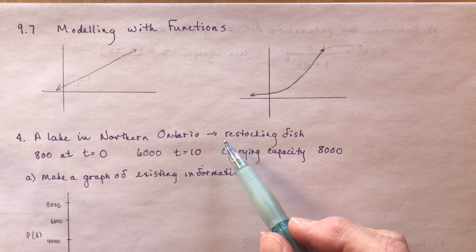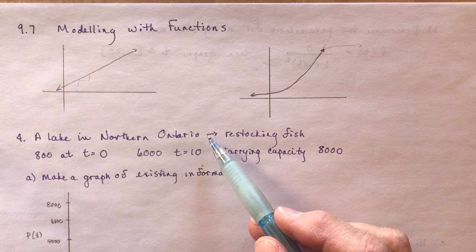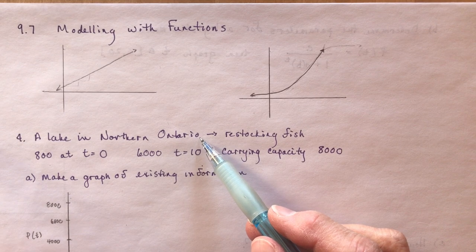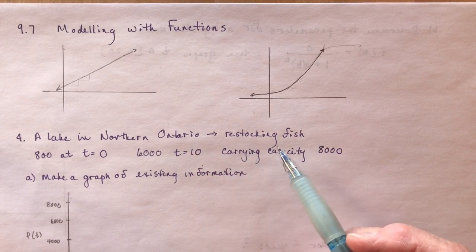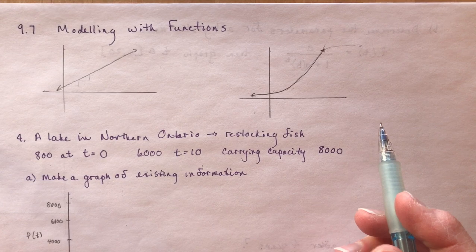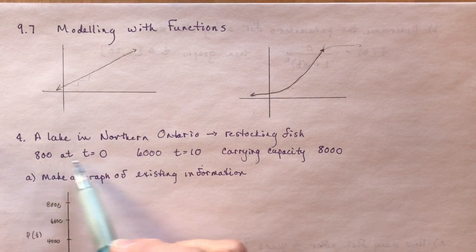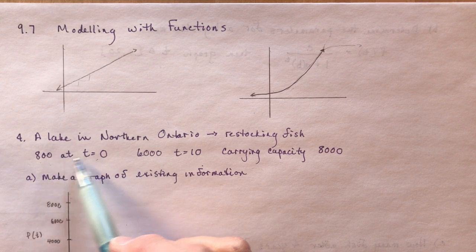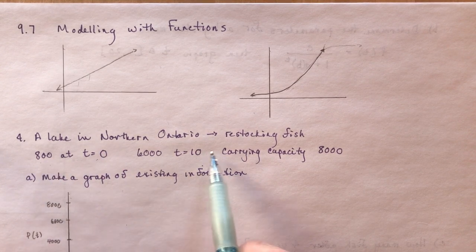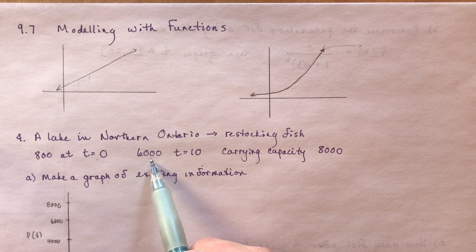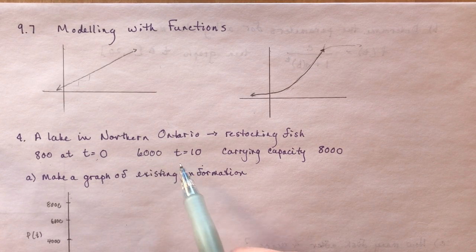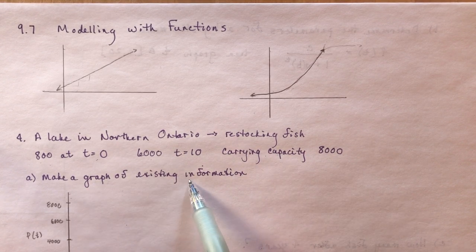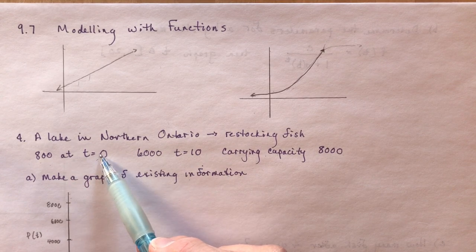So a lake in Northern Ontario, in the textbook was a very wordy word problem, just discussing how it had an oil spill and they had to restock the fish. So they put 800 trout into the lake at time zero. This is assuming there were no fish in the lake after the oil spill. By year 10, they had 6,000 fish. And the question was, with a carrying capacity of 8,000, first make a graph with the existing information.